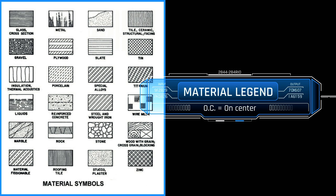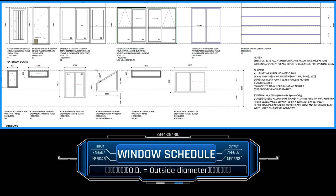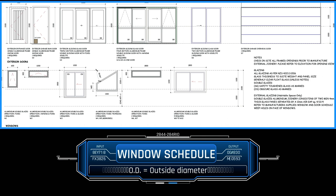Another form of information-gathering tool on drawings is the schedule. A schedule displays quantities, sometimes combined with a graphical representation, and serves to itemize all instances of a certain product, sometimes grouping them by type. For example, a window schedule would identify all window types in a project along with their size, material, operation, and number of instances of each type.